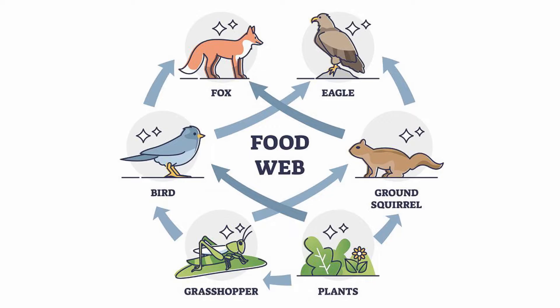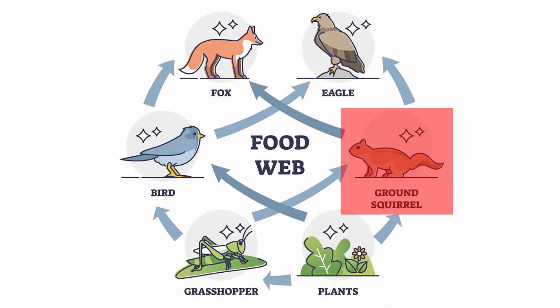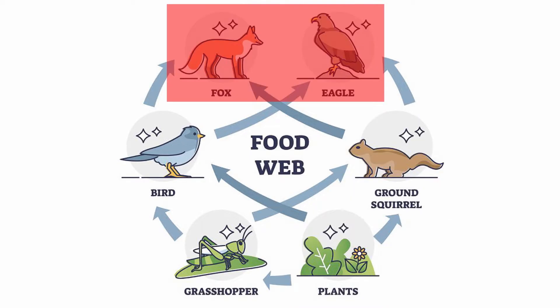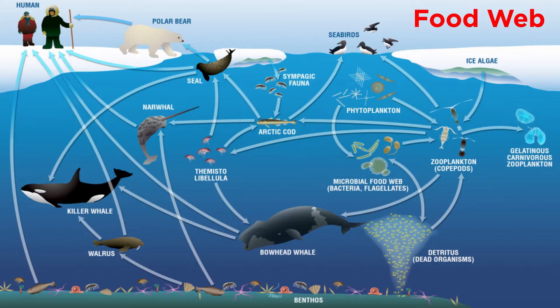Food webs represent feeding relationships within a community, and they also outline the transfer of energy from plants, at the bottom of the trophic levels, through herbivores, all the way to carnivores at the top. Normally, food webs consist of a number of food chains meshed together.